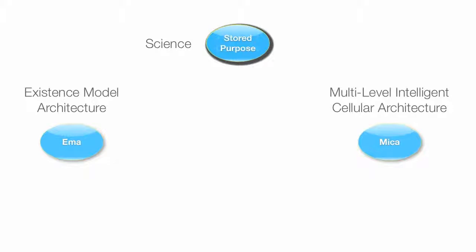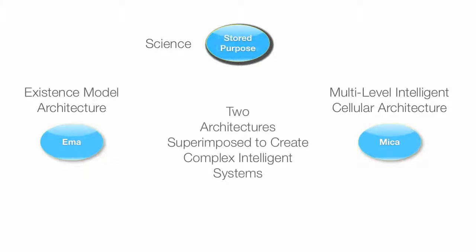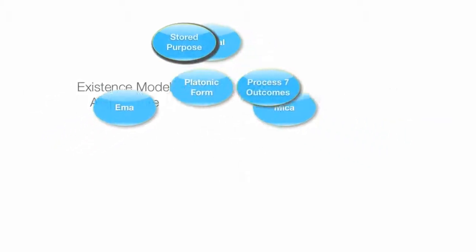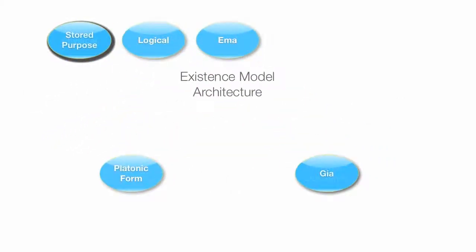And then the multi-level intelligent cellular architecture that is MICA, and a mouthful of that, does allow simple functional intelligent entities based on EMA to become complex entities. And that occurs when we superimpose those two architectures, taking individual EMA elements and using those methods to create more complex entities.